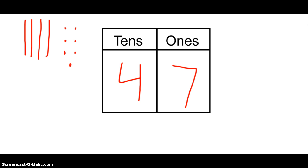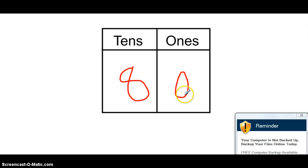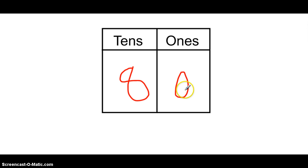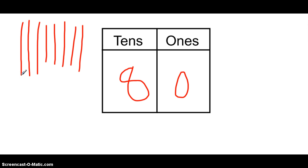One more. This time let's do the number 80. Pause the video and use your whiteboard to represent the number 80 using tens longs and ones cubes. In the ones place I have zero — so zero ones. In the tens place there's an eight, so I need eight tens longs. I just represented the number 80.